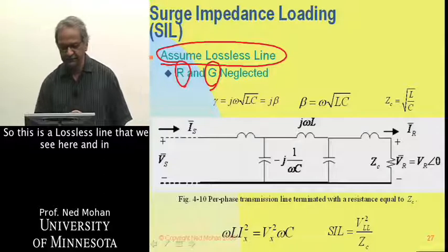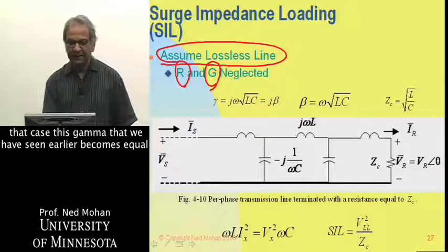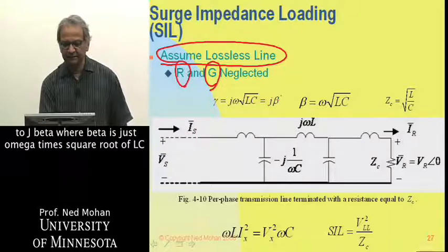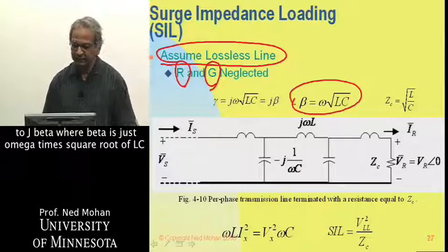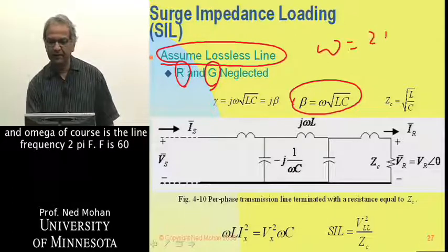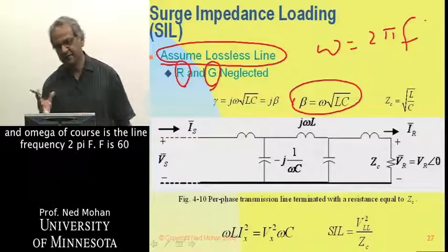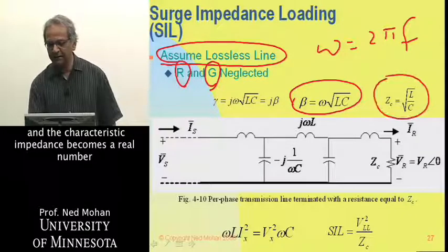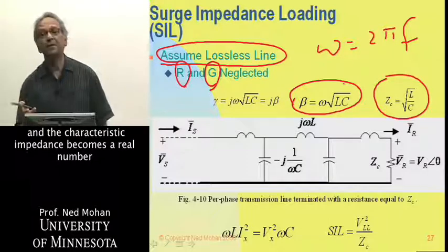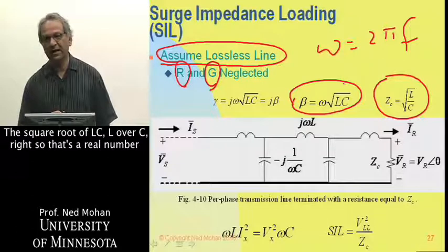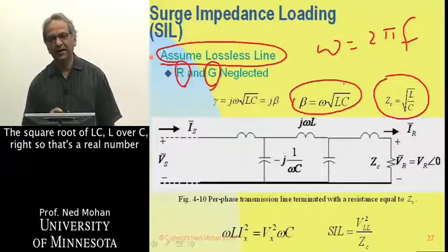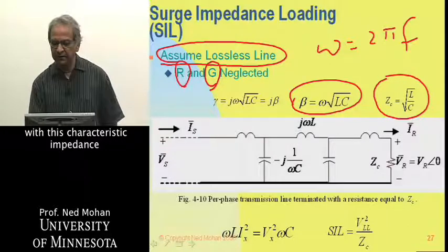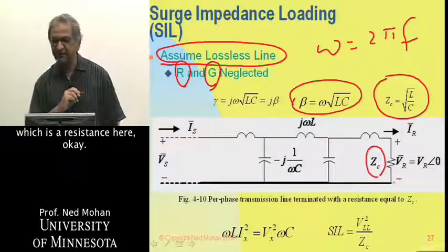So this is the lossless line as we see here. And in that case, this gamma that we had seen earlier becomes equal to j beta, where beta is just omega times square root of LC, and omega, of course, is the line frequency 2 pi f. f is 60 or 50, depending upon where you are. And the characteristic impedance becomes a real number as shown here, square root of L over C. So that's a real number. And we will load this transmission line with this characteristic impedance, which is a resistance here.